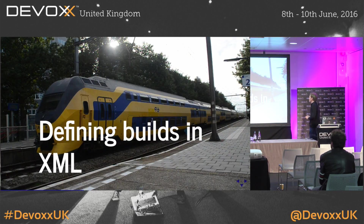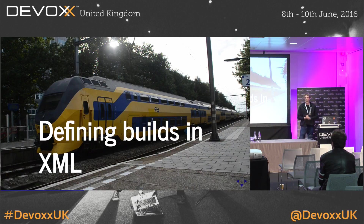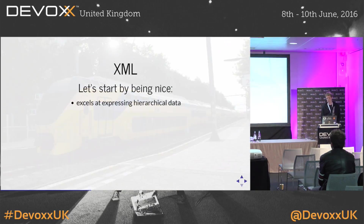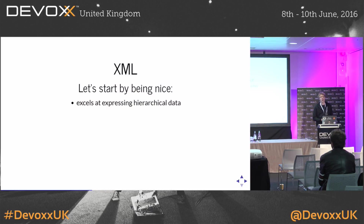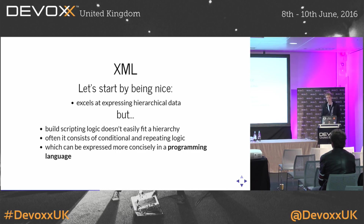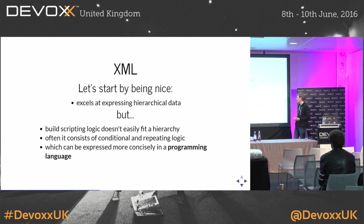There used to be just one build tool called Make, invented in the late 70s. The Java equivalent is Apache Ant, and Apache Ant defines builds in XML. What can we say about XML? Let's start by being nice — it really excels at expressing hierarchical data. But the problem is that build scripting logic doesn't easily fit a hierarchy. It consists of conditional logic and repeating logic — concepts you can express much more concisely in a programming language.